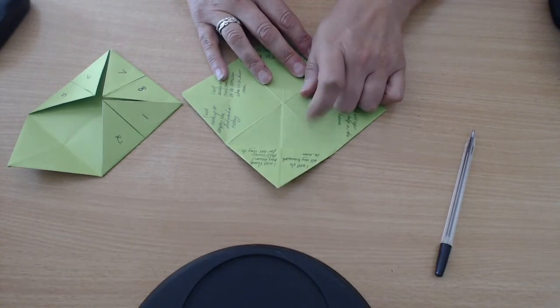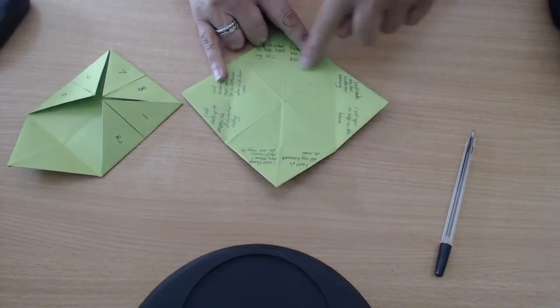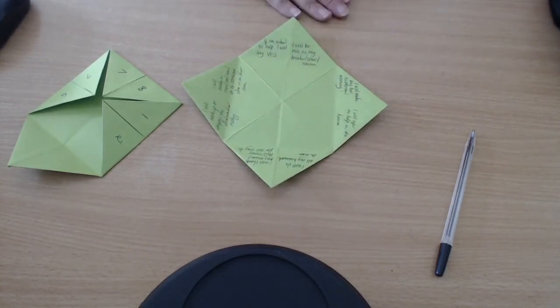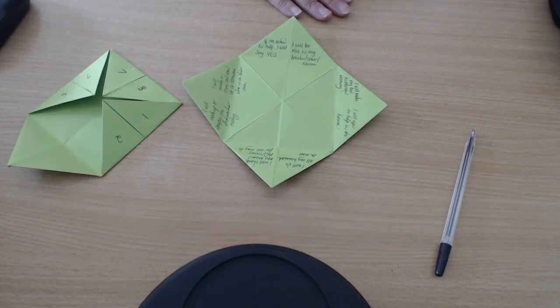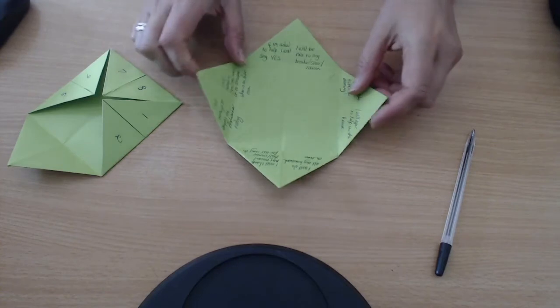I turn it around. This one says I will be nice to my brother or sister or cousin. You can put cousin if you haven't got a brother or a sister. This one says if I'm asked to help, I will say yes. Then we have I will make a card and send it to someone who is on their own. That might be a grandparent or even a neighbor if you know a neighbor on their own.